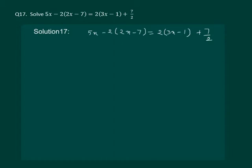First thing that we will do to solve this question is let us open the brackets. We get 5x minus 2 into 2x will be minus 4x minus 2 into minus 7 will be plus 14 which is equal to 2 into 3x is 6x minus 1 into 2 is minus 2 plus 7 by 2.